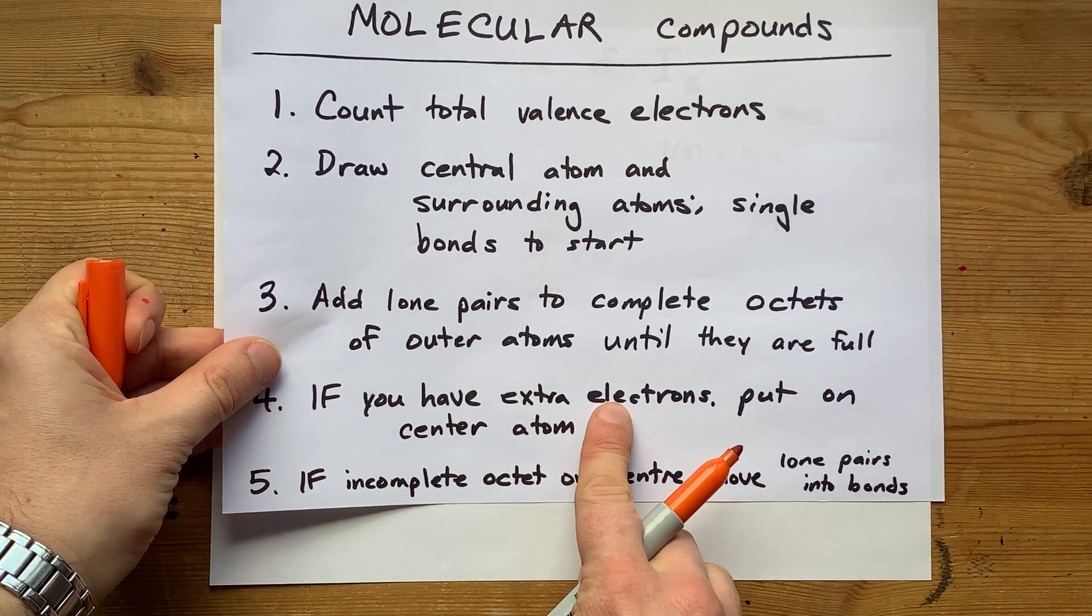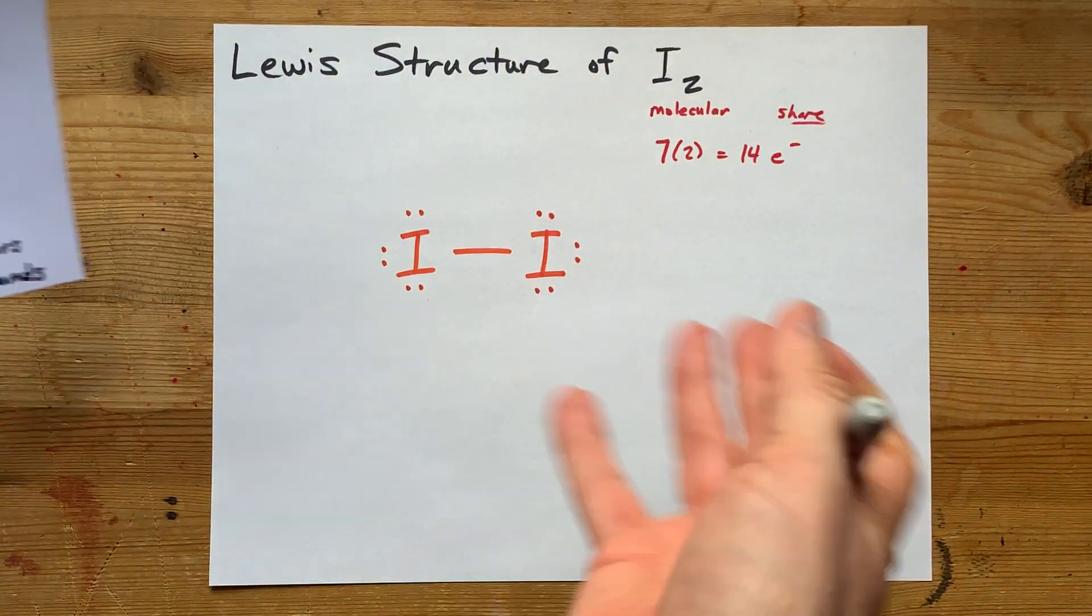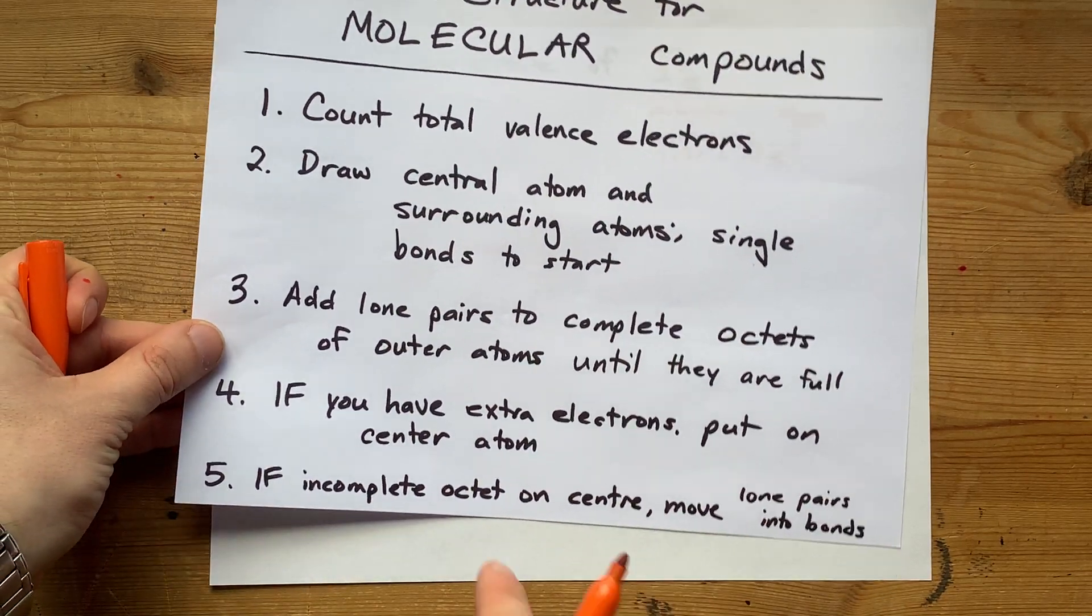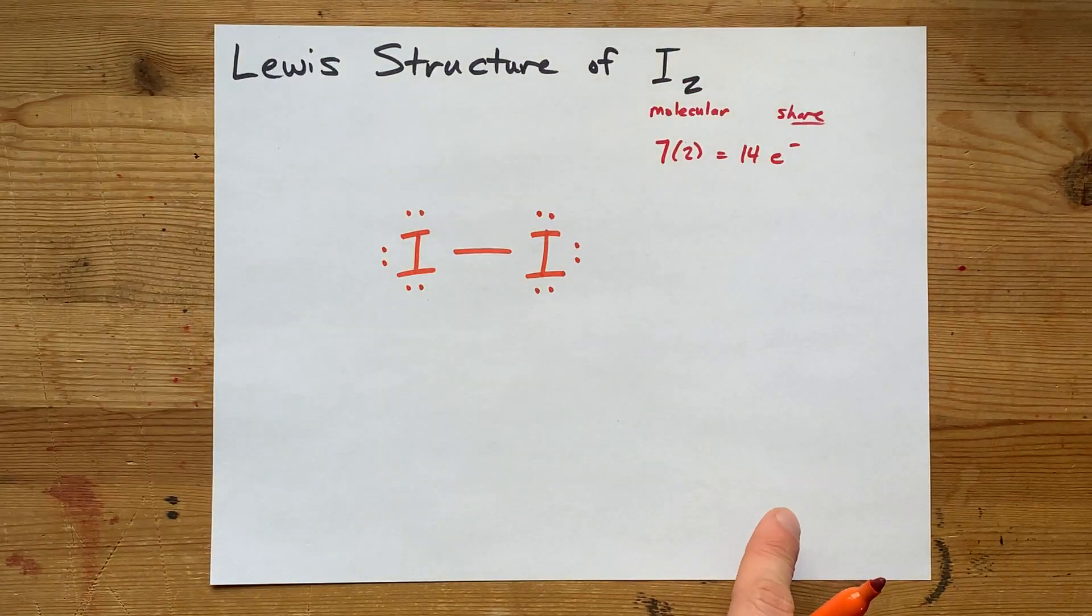Now, if you have extra electrons, which we don't, we'd put them onto the central atom, but actually there even isn't a central atom there. And if there's an incomplete octet on that central atom, we would move lone pairs.